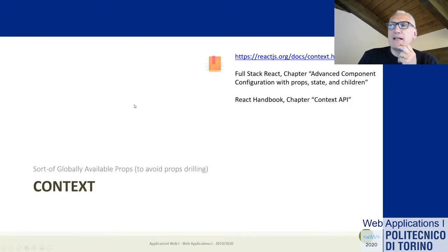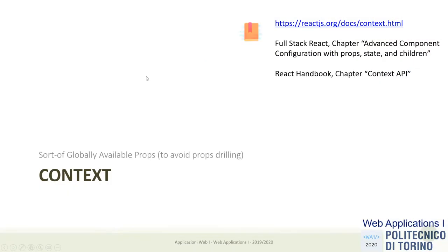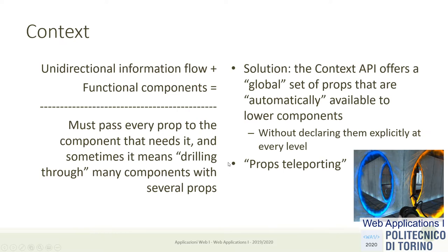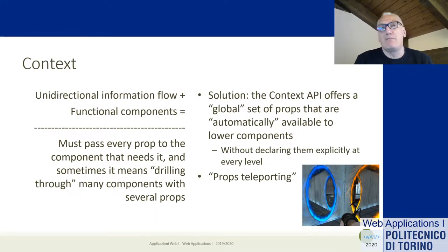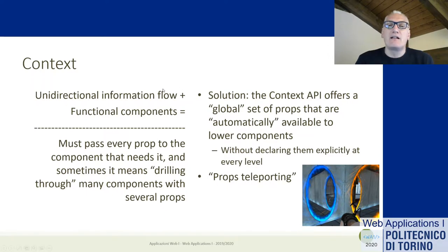We start this second part by analyzing the so-called context of a React application. Context is a quite recent addition to the React library that enables us to simplify, in some cases, the propagation of properties — avoiding the phenomenon called props drilling. This happens due to the combination of two basic principles of React. One principle is that components should be as functional in nature as possible, meaning they should only rely on the properties passed to them.